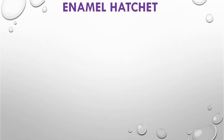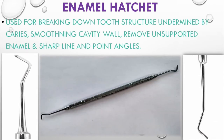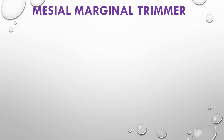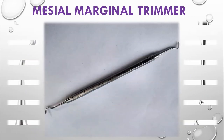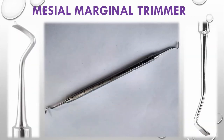Under special chisels, we study two instruments: the enamel hatchet and the gingival margin trimmer (GMT). The enamel hatchet is used for breaking down tooth structure undermined by caries, smoothening cavity walls, removing unsupported enamel, and sharpening line and point angles.